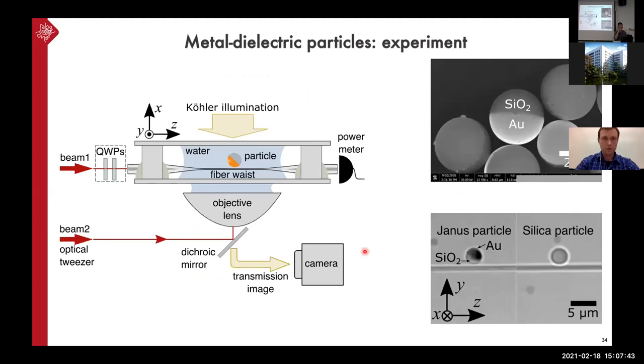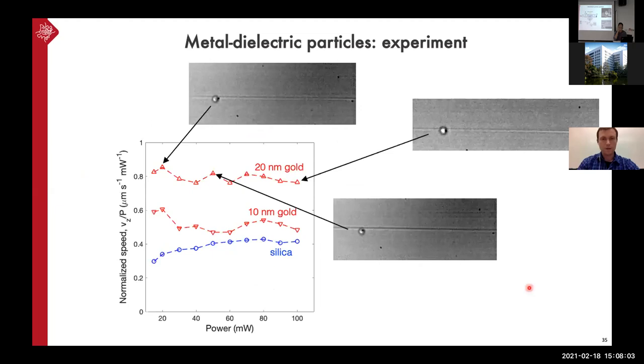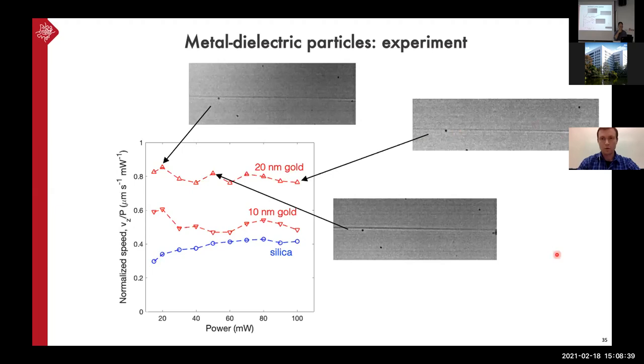So we did the experiment. Again, we have a polarization controller here to partially control the polarization. Set it to horizontal. This is the particle. And we observe the particle motion with the camera. So this is typical Janus particles that are half coated with gold and silica particles of the same size. And this is our results. So this is silica. And with 10 nanometer thick gold coating, we achieved some faster propulsion. And the optimum was with 20 nanometer gold. And actually thicker gold particles we couldn't even trap probably because of thermal effects. And the propulsion is faster for higher power. And then it's even faster, but it gets erratic probably because of thermal effects for higher powers.